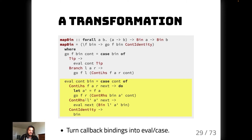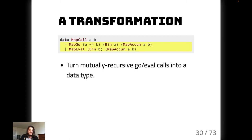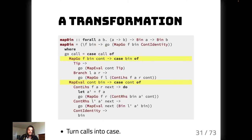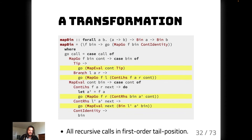We'll do a similar transformation as we did with our continuations: turn our mutually recursive `go`/`eval` calls into a data type as well. We have `MapGo` with the mapping function, the binary tree, and our accumulator; and `MapEval` with our return value and the accumulator. We move these into data types and a case. Now all our calls to `go` are in tail position with a single self-recursive loop, giving us a stack-safe implementation. This is all very mechanical and can be applied to essentially any first-order recursive algorithm.